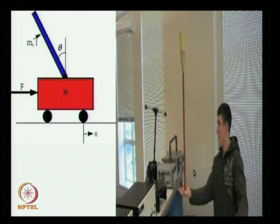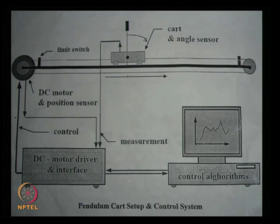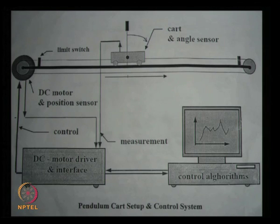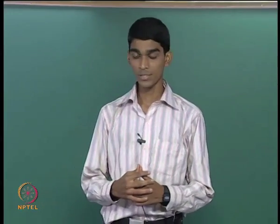It is just like balancing a pole in the palm. The setup consists of a rail over which we have a cart with a pole. We have a DC motor control system and a data acquisition system. We apply a series of constraint forces on the cart so that the pole starts to swing with increasing amplitude, and once the pole reaches the vertical position, it is maintained there using the control system.